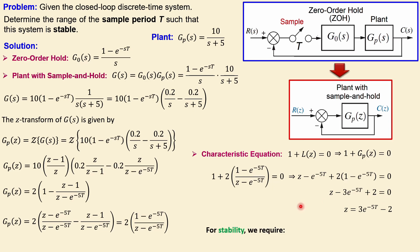For stability in a discrete time system in the z-domain, we require |z| < 1, meaning the poles must lie inside the unit circle. This can be expanded into two conditions: z > -1 and z < +1. The next step is to work out these two conditions for our expression z = 3·e^(-5T) - 2.